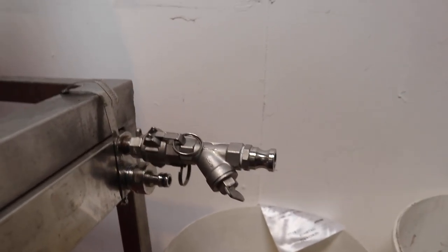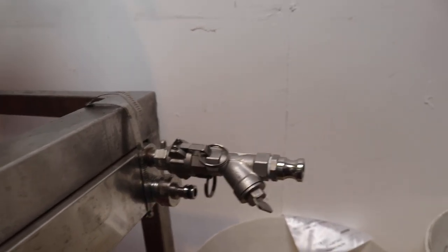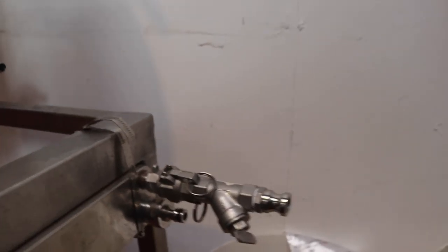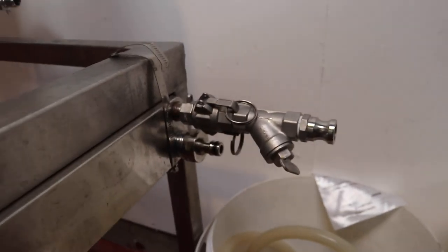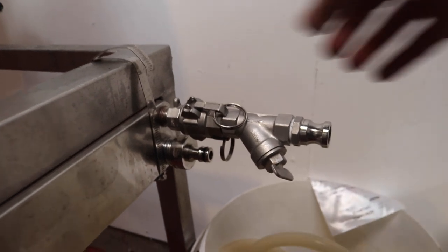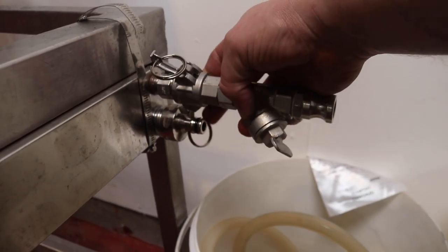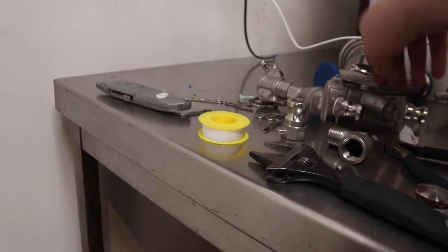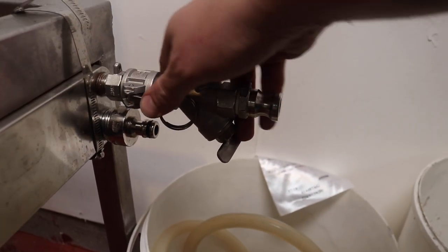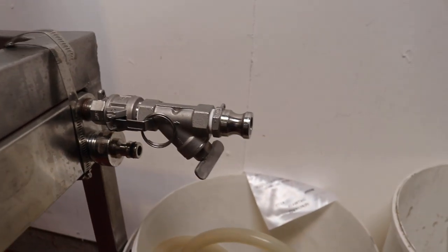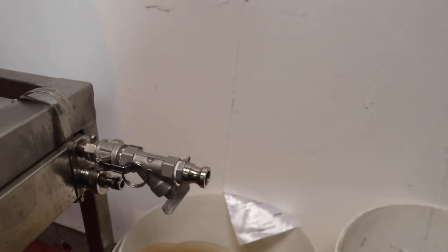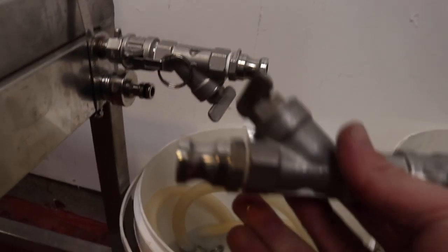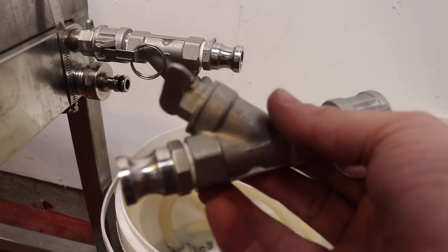And then the wire strainers have been relocated to the inlet of the plate chiller. So the idea being if we do get a bunged up wire strainer, we simply isolate the flow, take the wire strainer off and replace it with the other one which can be sat in some star san.